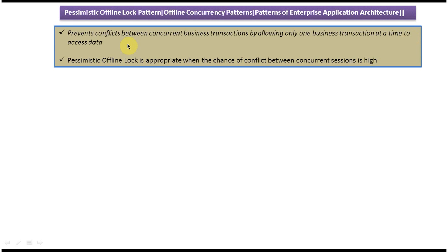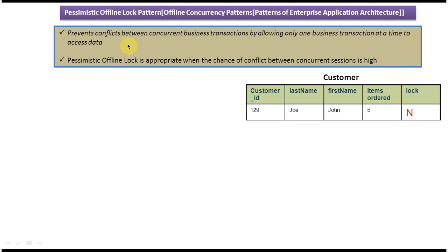To explain this pattern, I have taken a customer table. This customer table has five columns: customer ID, last name, first name, items ordered, and lock. It has only one row — customer ID is 129, last name is Joe, first name is John, items ordered is 5, and lock is N. The lock column is the important one; initially lock is N, meaning there is no lock on this row.